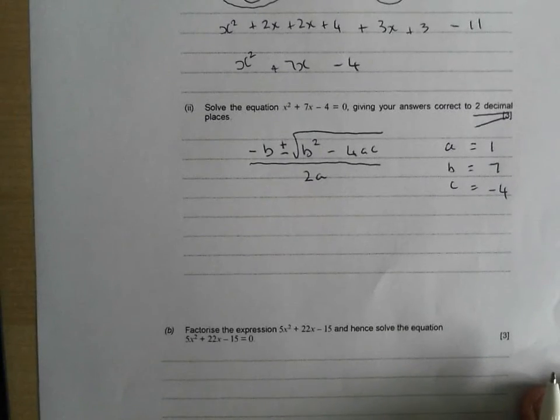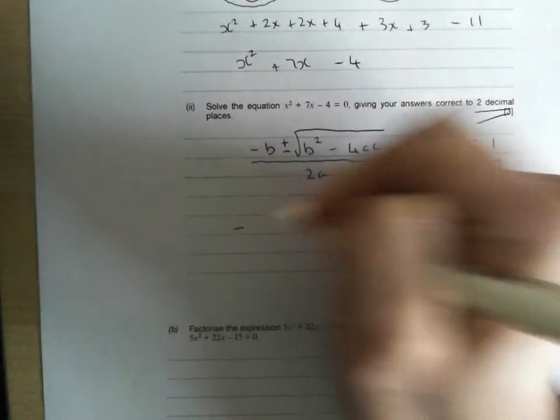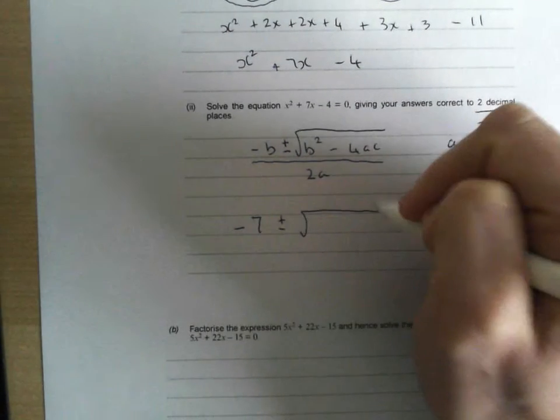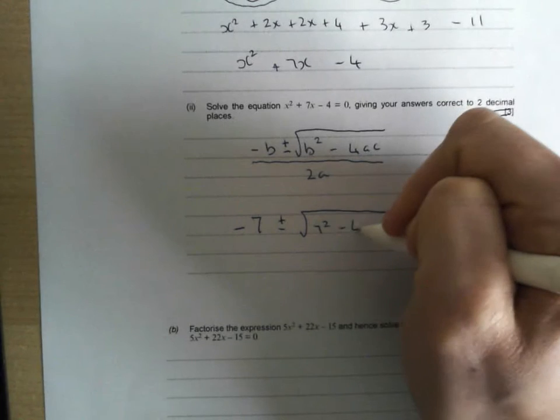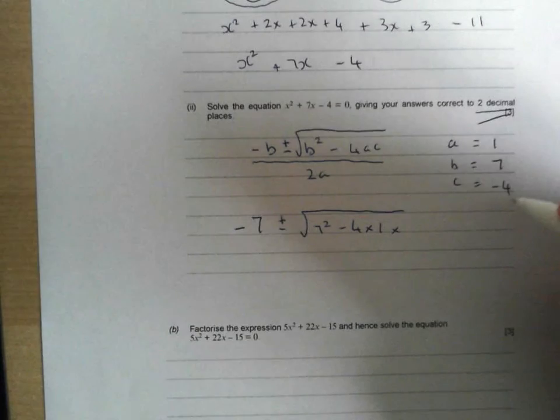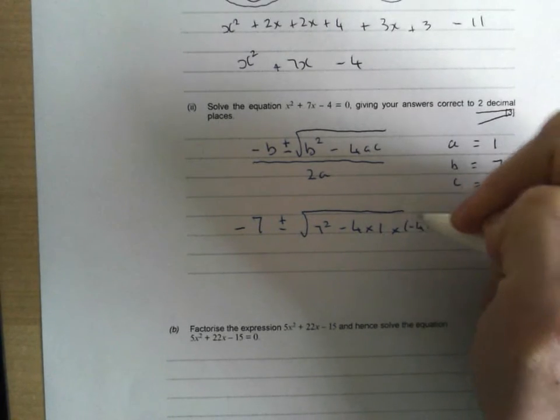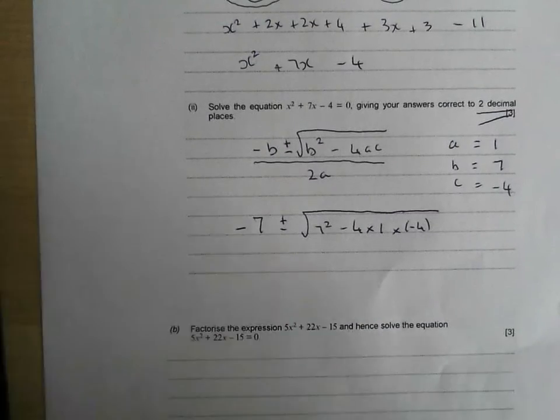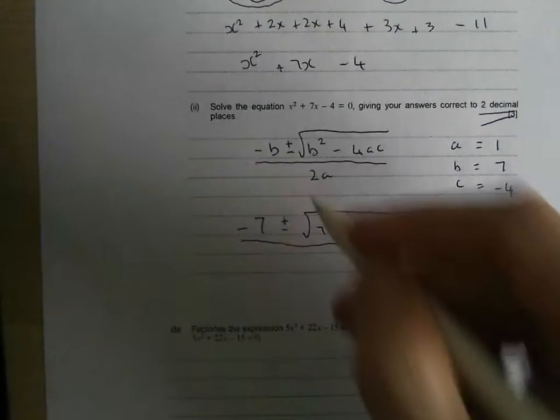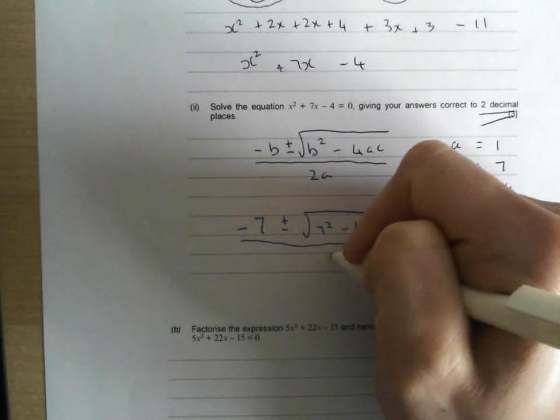And then show the examiner that you've entered your values in. So minus B, so minus 7, plus or minus the square root of B squared, 7 squared, minus 4 times by A which is 1, times by C which is minus 4. Put your minus 4 in a bracket. All divided by, make sure that division sign goes all the way across, two lots of A, two lots of 1, or just 2.